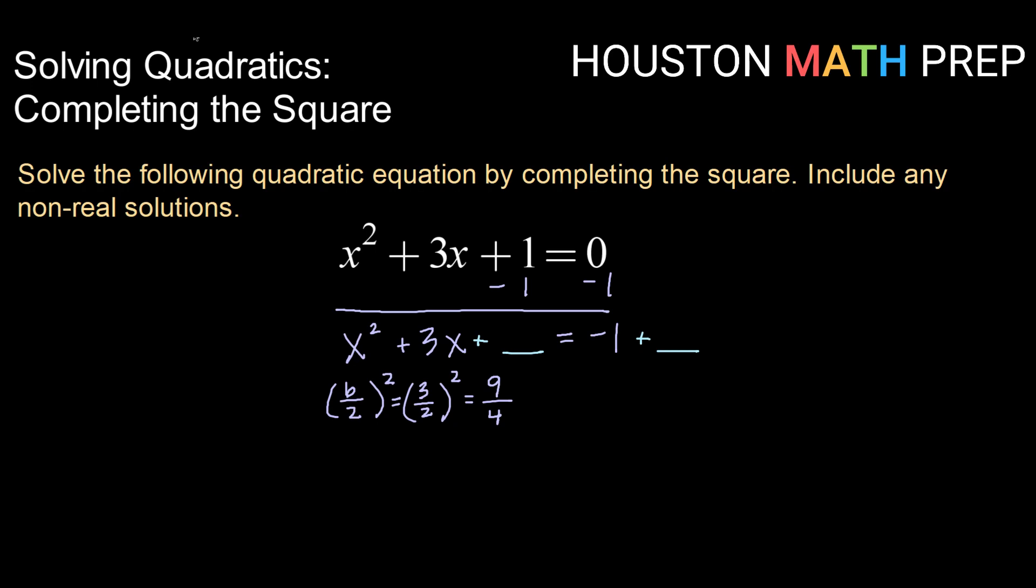So 9 over 4 is going to be the constant that we add to both sides to create our perfect square trinomial. So when your b value is odd, you're going to get a fraction as what you add.